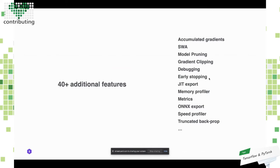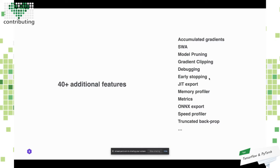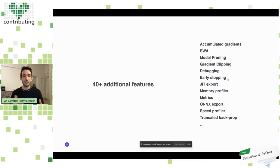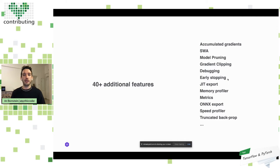There are plenty of different amazing features: accumulated gradients, stochastic weight averaging, model pruning and the lottery ticket hypothesis, gradient clipping, debugging, early stopping, JIT export, ONNX export, a memory profiler, integrated metrics, speed profiler, and truncated back-propagation. If I were a developer trying to take a PyTorch implementation I found on the internet and add all these features, it would be extremely hard. But if they're using PyTorch Lightning, I just play with the flags of the trainer and can quickly experiment and apply best practices to any Lightning model.